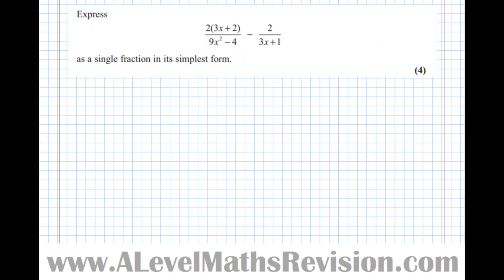This next example asks us to express two fractions with a subtraction in the middle as a single fraction in its simplest form. To add or subtract fractions we need to find a common denominator. However, you should notice that this denominator will factorise — it's the difference of two squares. Rewriting it fully factorised first is probably going to make it a lot simpler, as a lot of questions are designed to be made simpler via factorisation.